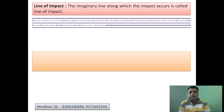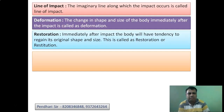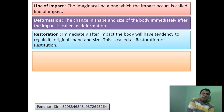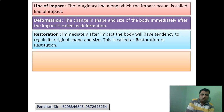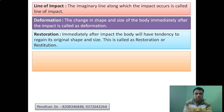Now let us study the types of impact. First, some basic definitions: the line of impact is an imaginary line along which two bodies collide with each other. Deformation is the change in shape and size of a body immediately after impact. Restoration is the tendency of a body to regain its original shape and size immediately after impact.